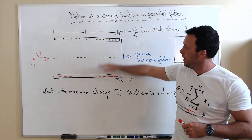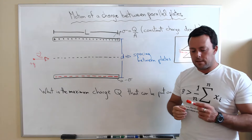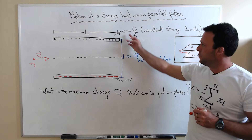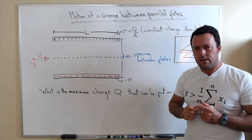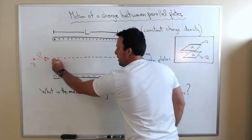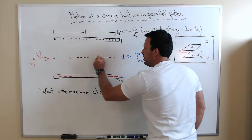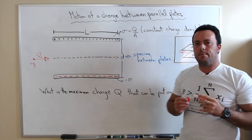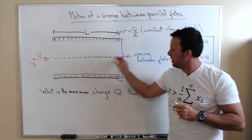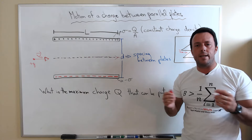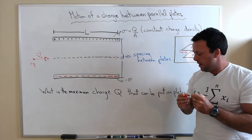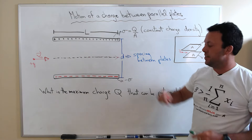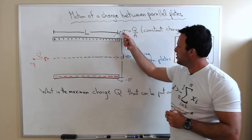Let's look at a couple of simple cases. The first is: what if there's no charge on the plates? If there's no charge on the plates, the particle is simply going to continue along the dotted line and will not be deflected — there's simply no force acting on the charge. The other case is: what if there's a lot of charge on the plates?